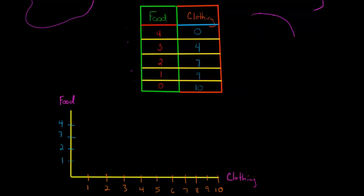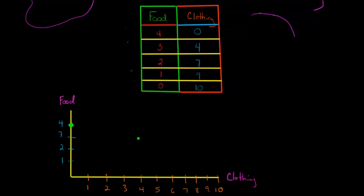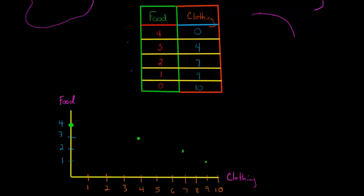So we can plot that point — four units of food right here at the origin, which is zero units of clothing. We can think of that as point (0,4). Then we have point (4,3): three units of food corresponds to four units of clothing. Two units of food corresponds to seven units of clothing. As we give up some food, we're able to get more clothing. One unit of food corresponds to nine units of clothing. And if we produce no food at all, we could have ten units of clothing. So now we can draw our curve through those points — this is our PPF, our Production Possibilities Frontier.